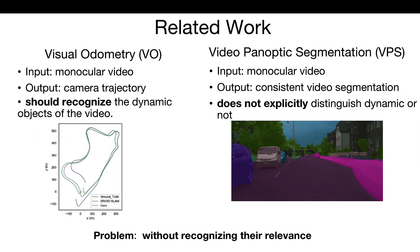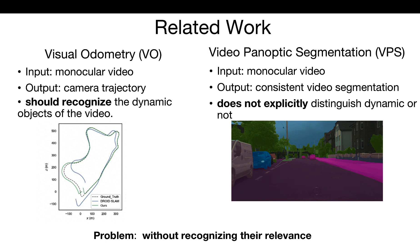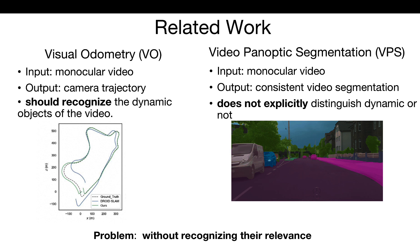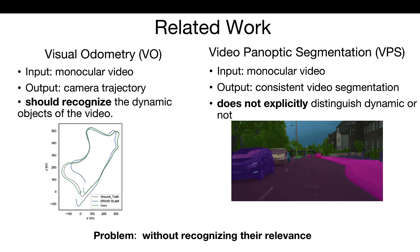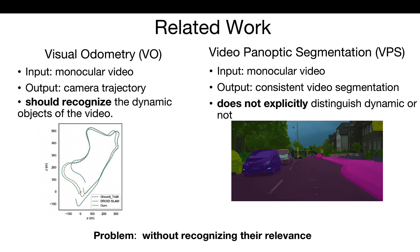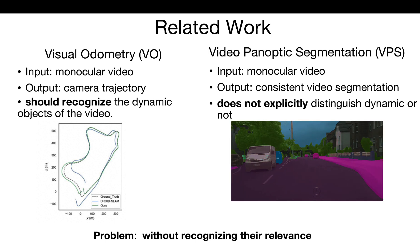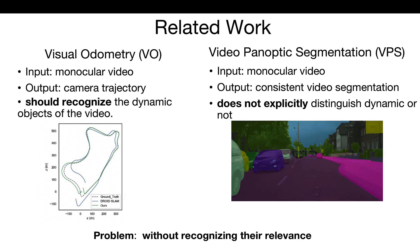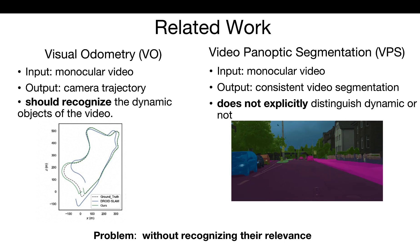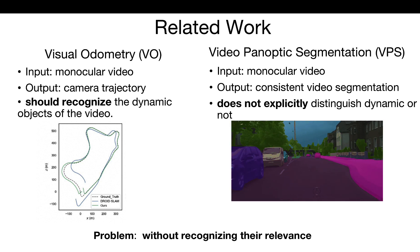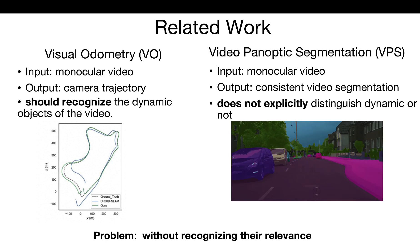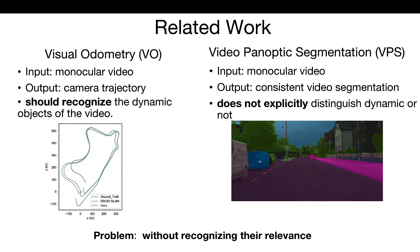Two tasks are proposed to model the geometry and motion of scenes: visual odometry (VO) and video panoptic segmentation (VPS). Visual odometry takes monocular video as input and estimates the camera pose for each frame, and needs to recognize dynamic objects. In contrast, video panoptic segmentation first obtains panoptic segmentation of a single image and then tracks instances with feature similarity, which does not explicitly distinguish whether objects are moving or not. Existing methods divide the two tasks without recognizing their relevance.